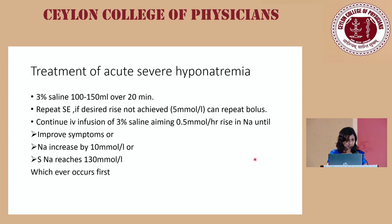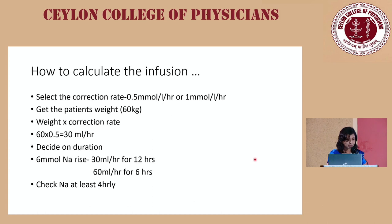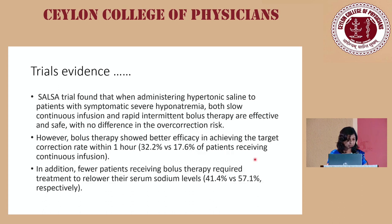For acute severe hyponatremia, give 3% saline as a bolus of 100–150 mL over 20 minutes, then recheck electrolytes. You can also give a continuous infusion of 3% saline until symptoms resolve or a 10 mmol/L correction is achieved. Calculate infusion rate by multiplying rate by the patient's weight and monitoring every 4 hours. The SALSA trial evaluated bolus versus continuous regimes and found both equally effective.